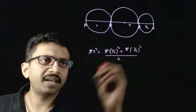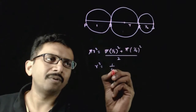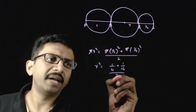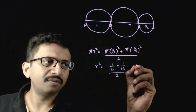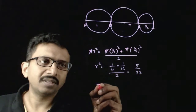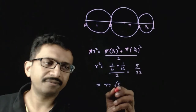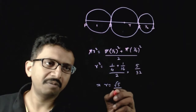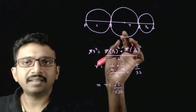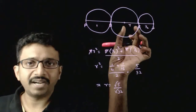This pi, pi, and pi get cancelled. So r squared equals 1/4 plus 1/16, divided by 2, which equals 5/16 divided by 2, that is 5/32. This implies r is equal to root of 5 divided by root of 32, and r is the radius of the middle circle.